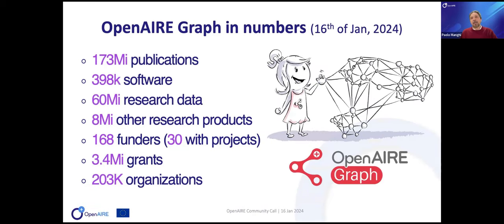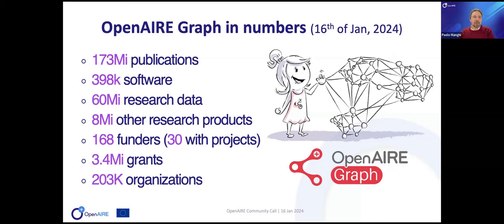These are the numbers after deduplication. The total number of records we collect is close to half a billion — 500 million. After deduplication, we have 173 million publications, almost 400,000 software records, 60 million research data items, 80 million other research products, 168 funders — 30 of which provide grants data — 3.4 million grants, and 200,000 organizations.